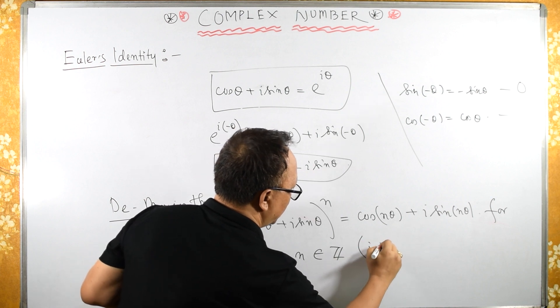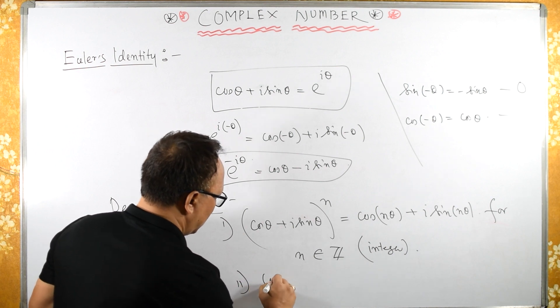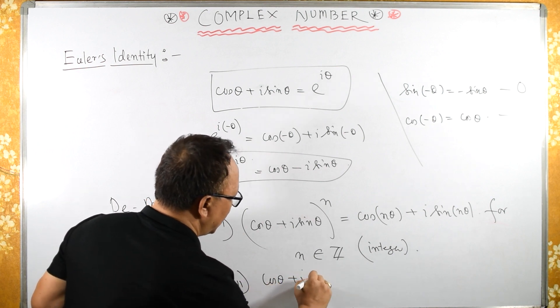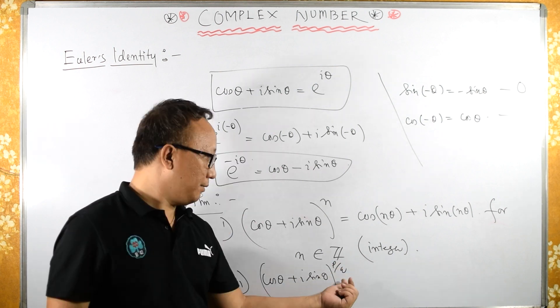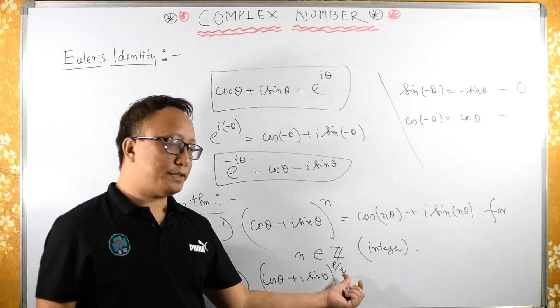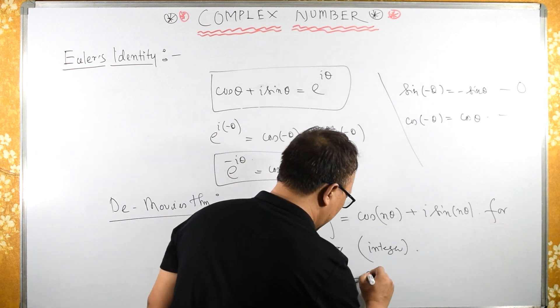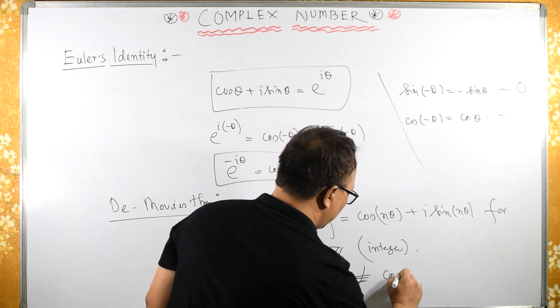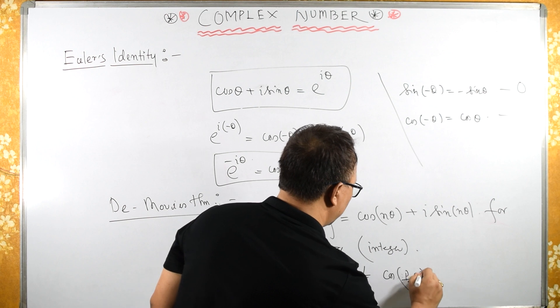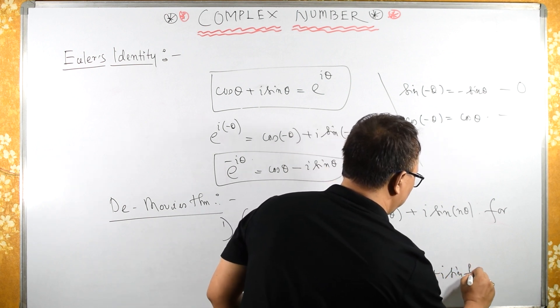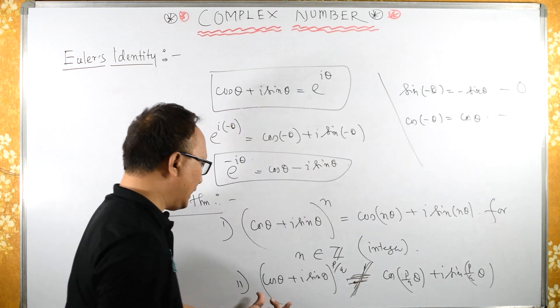Then it is not the same as cos of P by Q theta plus i sin of P by Q theta. It is not the same. So I will explain what this is.